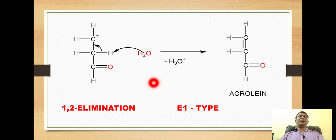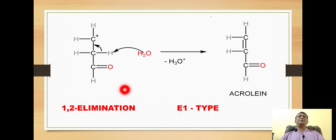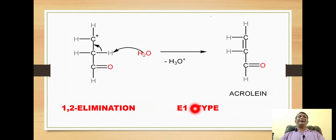Dear students, we find that every time the hydrogen is abstracted by the water molecule from the carbon which is next to the carbocation. So if the carbocation is on carbon number one, the abstraction is from carbon number two. In this way, there is always a 1,2-type elimination. This reaction represents 1,2-elimination and it is a type of E1 elimination. That is all about the mechanism of conversion of glycerol to acrolein.